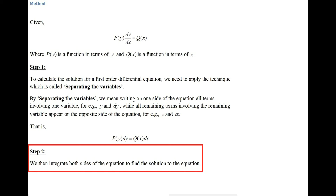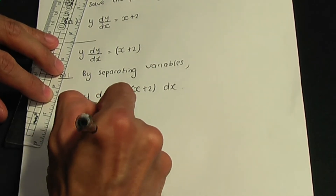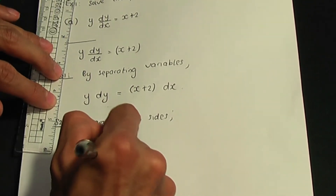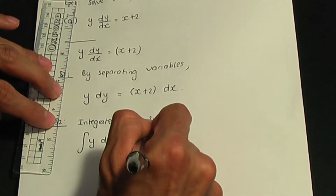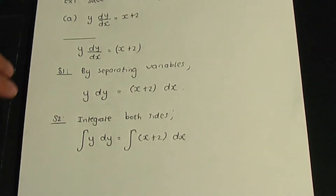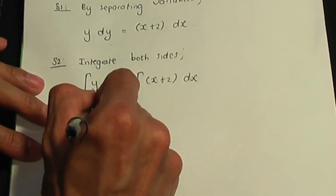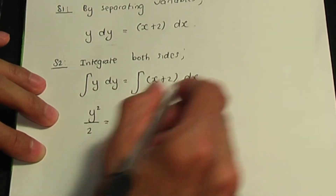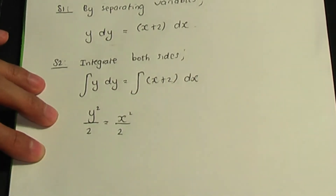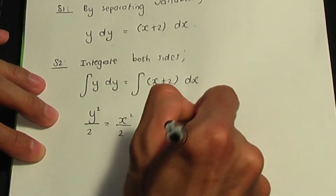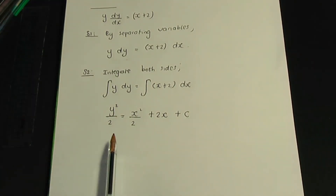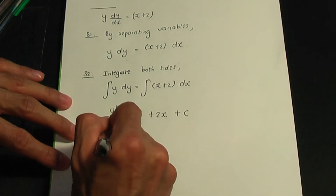Now we need to integrate both sides. Integrate y with respect to y on the left-hand side, and integrate (x + 2) with respect to x on the right-hand side. Integrating y with respect to y gives y²/2. Integrating x + 2 with respect to x gives x²/2 + 2x. Add the constant c on one side. So the general solution is: y²/2 = x²/2 + 2x + c.